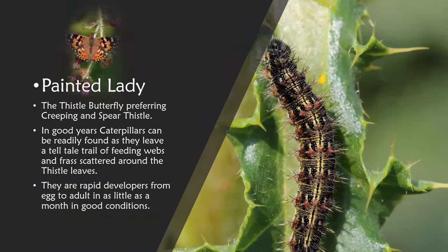Finally for the larva section we have painted lady — the only butterfly larvae you will find on thistle really. Creeping thistle and spear thistle are the most popular places to look. In good years thistle patches can be quickly devastated by them. They leave behind a debris of frass and webbing that is unmistakable. 2019 obviously was a good year to go looking for them.